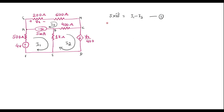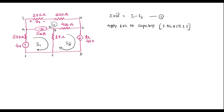Now we need to apply KVL to the super loop. The loop surrounded by this current source is known as the super loop. So the path F, A, G, H, C, B, E, F is the super loop. That is, apply Kirchhoff's Voltage Law to this super loop.